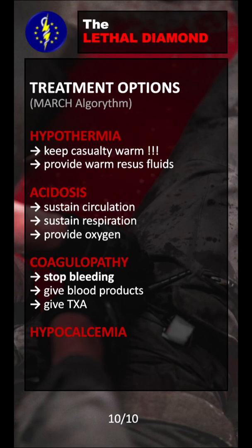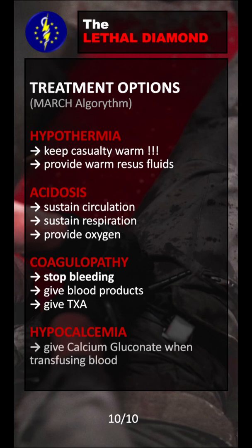Hypocalcemia, or decreased blood calcium, can be easily treated by giving calcium gluconate or other forms of calcium at the same time as we give blood transfusions to our patients.